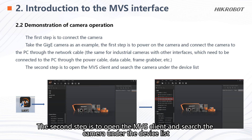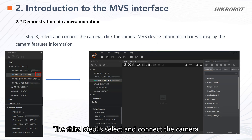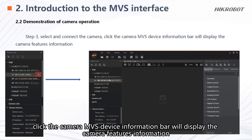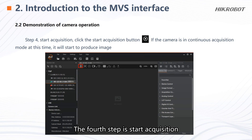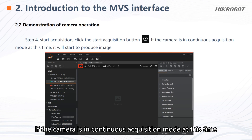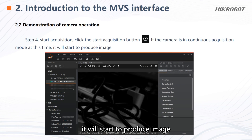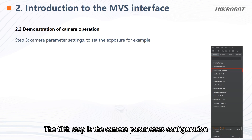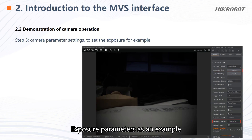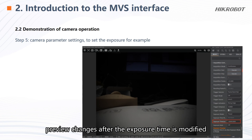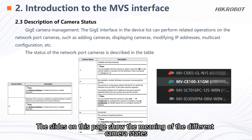The third step is to select and connect the camera. Click the camera and the MVS device information bar will display the camera features information. The fourth step is to start acquisition — click the start acquisition button. If the camera is in continuous acquisition mode, it will start to produce images. The fifth step is camera parameter configuration, using exposure parameters as an example to preview changes after the exposure time is modified.